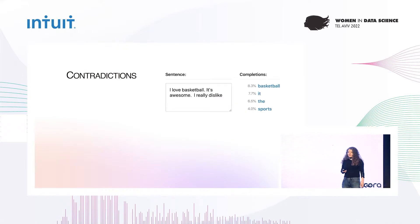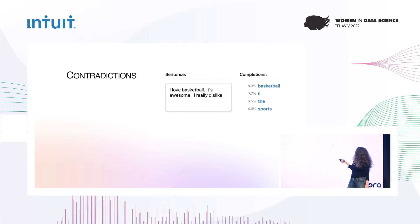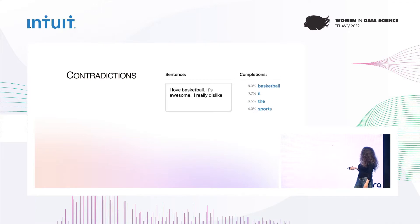An example from contradictions — here is from GPT-2, an older model, when the model is given the context 'I love basketball, it's really awesome, I really dislike,' and still assigns a high probability to the word basketball as the next token, even though it contradicts the context it was given.